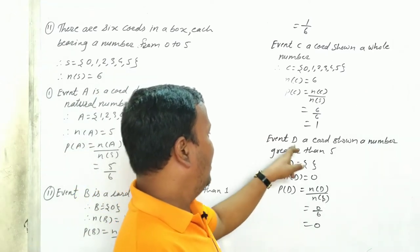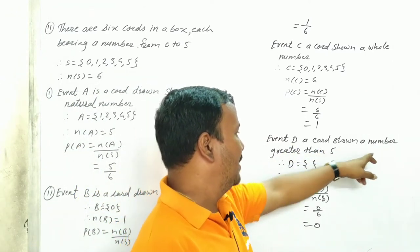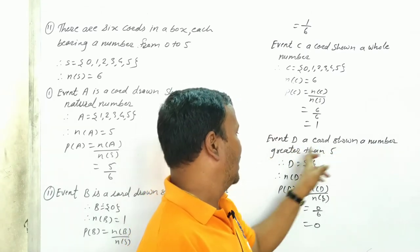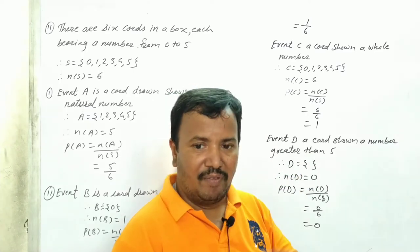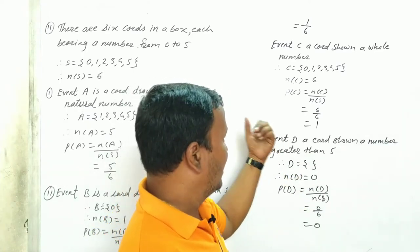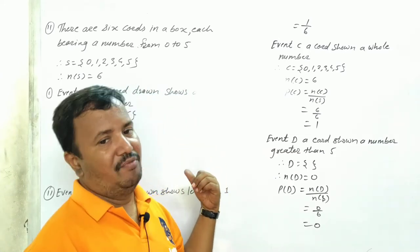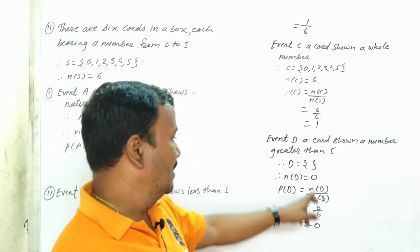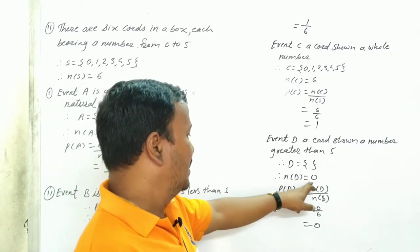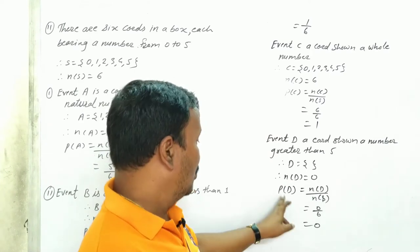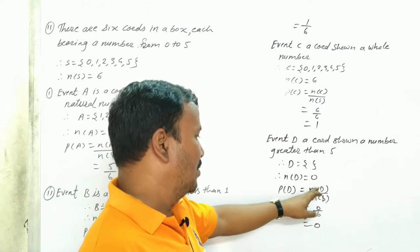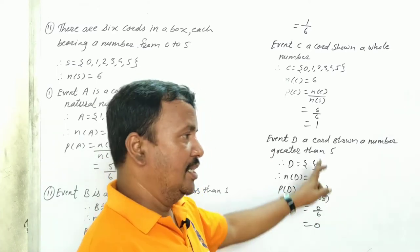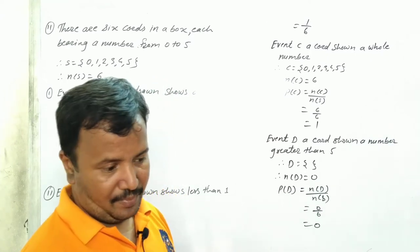Event D: a card drawn shows a number greater than 5. The last card number is 5, so there is no number greater than 5 in our cards. So D is a blank — null set. Number of D is equal to 0. Probability of D is equal to 0 upon 6, which is 0.